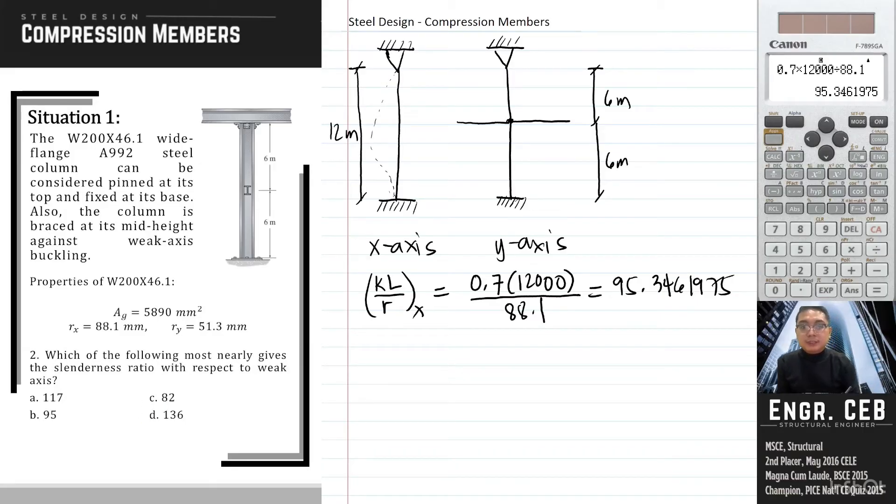Problem 2: Which of the following most nearly gives the slenderness ratio with respect to weak axis? For the weak axis, that is y-axis. We will now investigate which among the two segments has the larger effective length. For the upper part of the column, KL is simply equal to, since this is pin support and the point of bracing is also considered as pin, our k for the upper segment is 1.0 times 6 meters. For the lower segment, we have a pin support and fixed support, so k will be 0.7, and that is 4.2 meters. Therefore, the larger effective length is 6 meters.